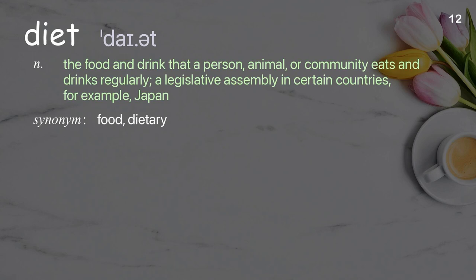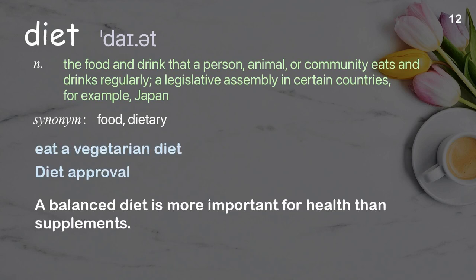Diet. The food and drink that a person, animal, or community eats and drinks regularly. Also, a legislative assembly in certain countries, for example, Japan. Examples: Eat a vegetarian diet, diet approval. A balanced diet is more important for health than supplements.